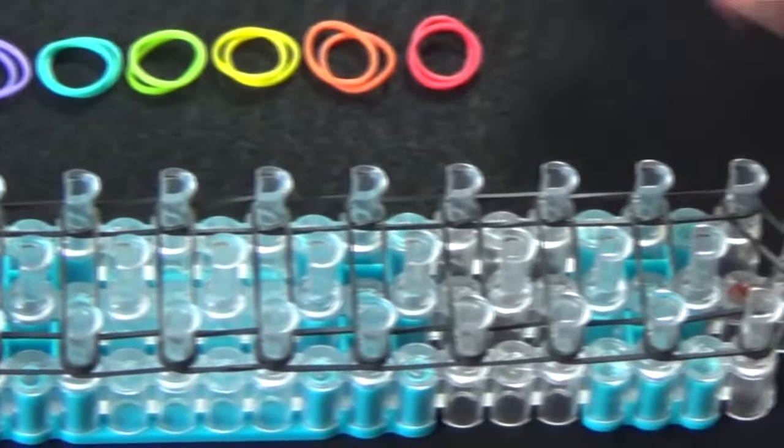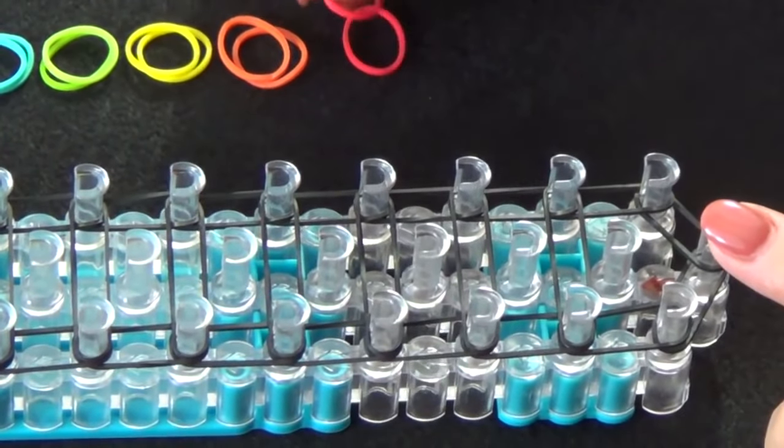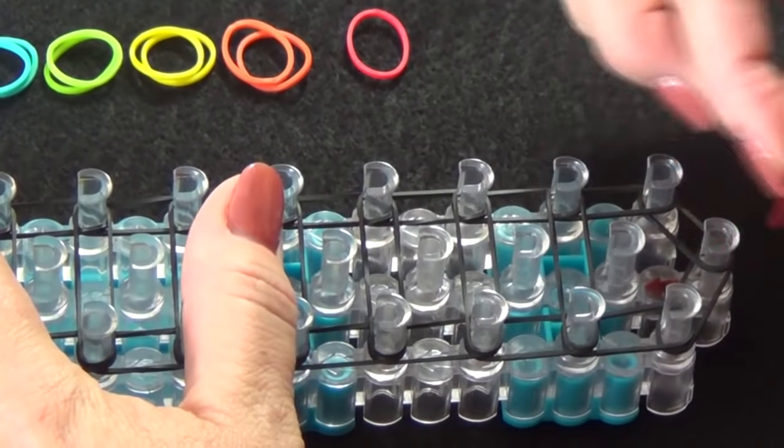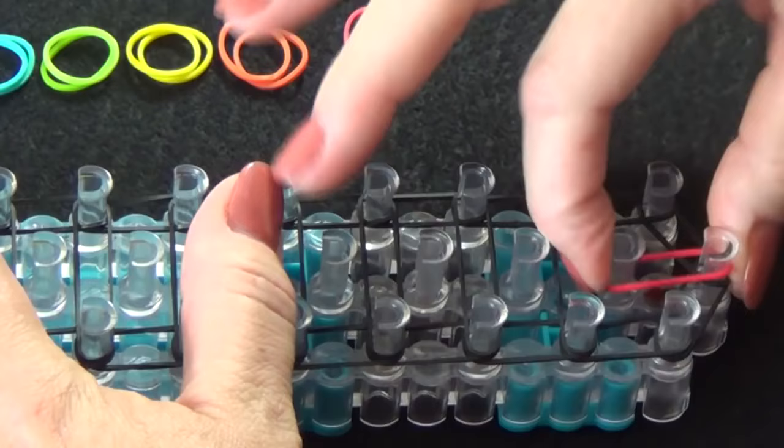and this is where we'll be using the rainbow colored bands. We'll start with red, start from the middle point of the loom, stretch that out,